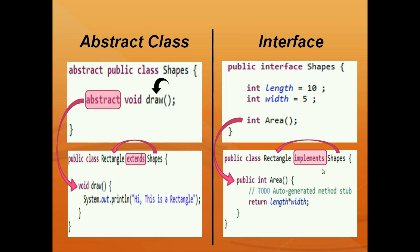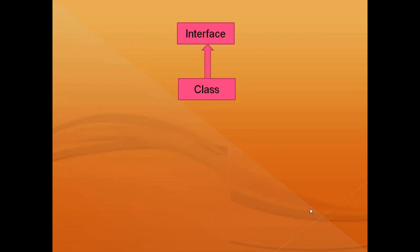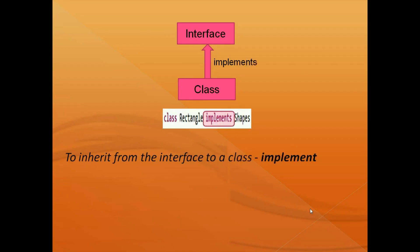We have the area method inside our interface, and we need to define it in our subclass because all methods inside the interface are abstract by default. So we need to give the definition in the implemented class — here the method just prints the area of a rectangle. Whenever we want to inherit from the interface, we use the keyword implements rather than extends.